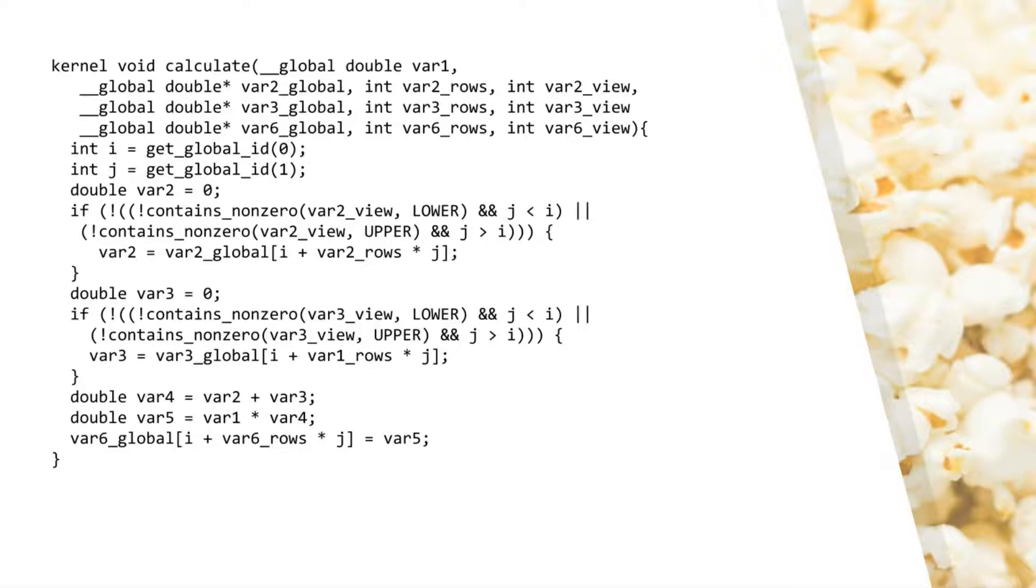Next, var4, the sum, is calculated. Var5 receives the result of the multiplication with the scalar, and on the final line, the result is written back to global memory.